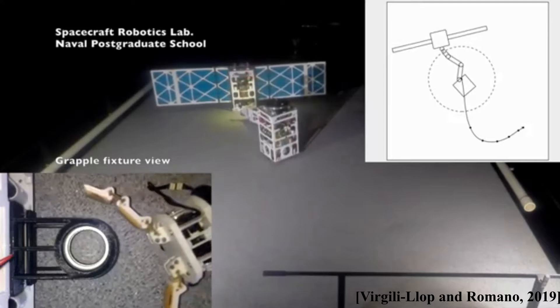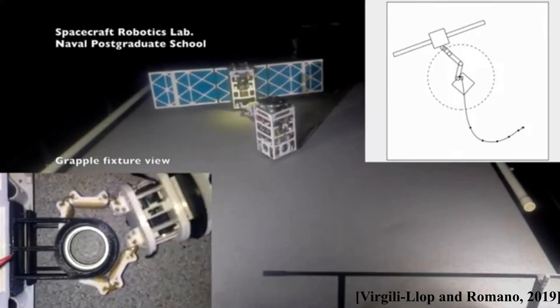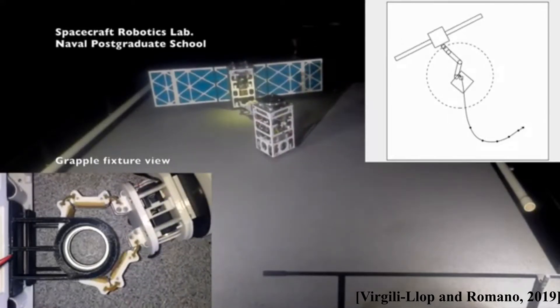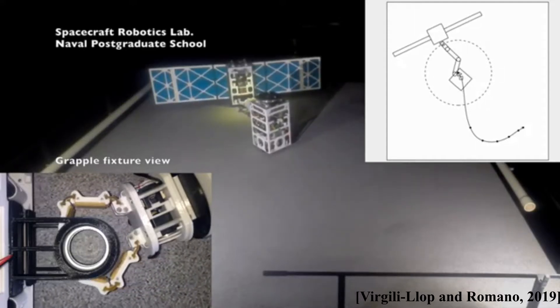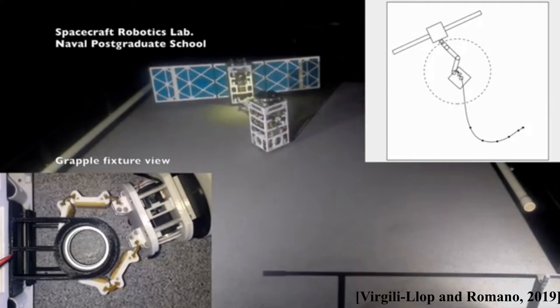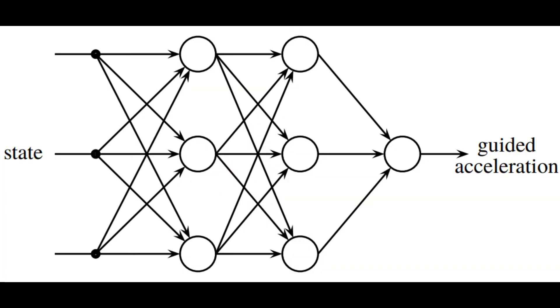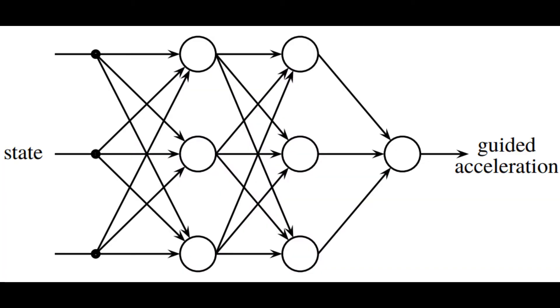Inspired by this previous work, we build upon it and apply machine learning techniques to the same problem. This allows us to develop advanced capture techniques while reducing the engineering effort involved and improving performance. The type of machine learning we use is called deep reinforcement learning. It trains a neural network, shown here, to accept the state of the system and calculate a guided acceleration signal. The chaser then has to track that guided acceleration signal in order to complete the task.